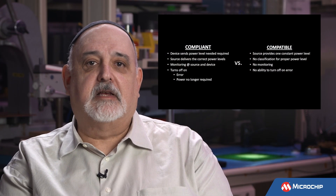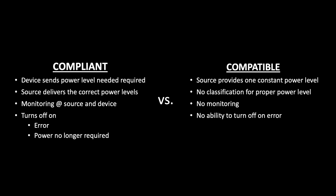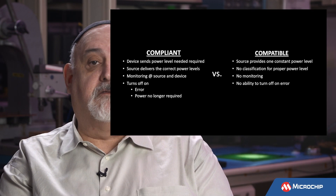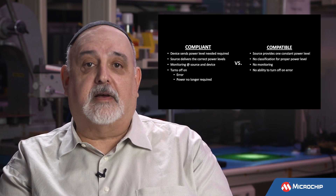And what does that mean? That basically means that it does not offer many of the benefits that PoE has. The way PoE works is the device sends a signal to the source to tell it, I need 90 watts of power from the source. And then the source says, okay, I know you need 90 watts of power, I'm going to turn on and deliver 90 watts of power. And once this classification handshake occurs, the chips on both sides continue to monitor to make sure there are no faults, there are no overage, there are no underage. That is what a compliant device does.